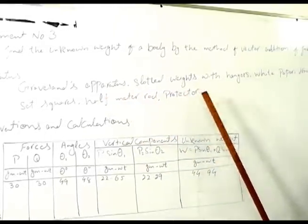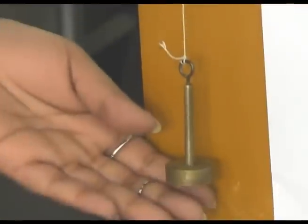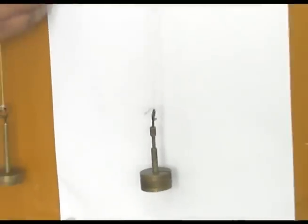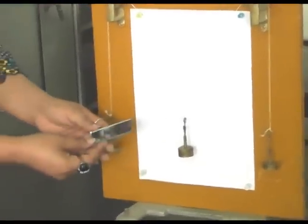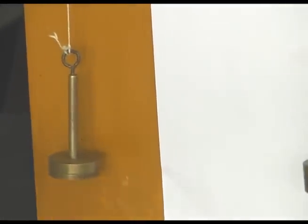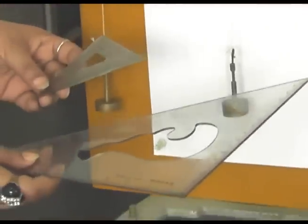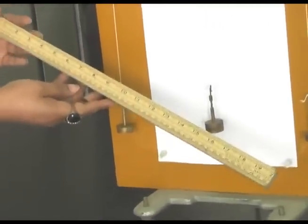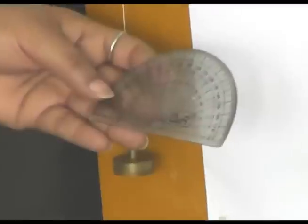Round and contactors, premise and apparatus, snowplink waves with hangers, white paper sheet with paper pins, mirror strip, set scale, half meter rods.